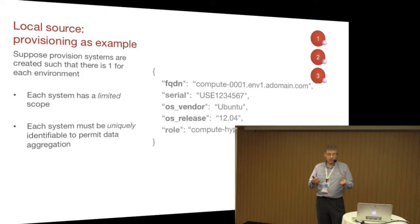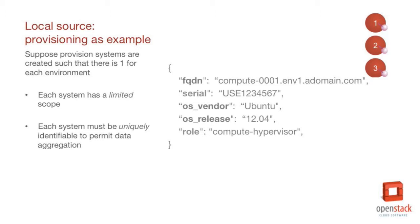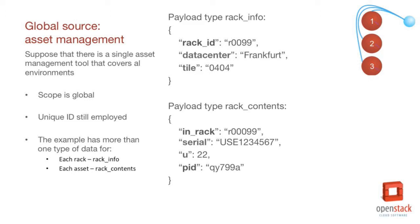Some of the information you might get in a provisioning system includes a fully qualified domain name, a serial number of the box, what OS it's been provisioned with, and because we were using Chef at the time, you'd have a role applied to it for Chef. In a global source, we have the ability to go out and actually scan all the racks and get information about the elevation and where all the different things are placed — useful for finding things physically. The scope is global and covers the whole environment, but we've still got an ID attached to that. We've got two different types of records: the actual racks — each rack has information about where it's parked — and then within the rack, each of the slots and what those are.